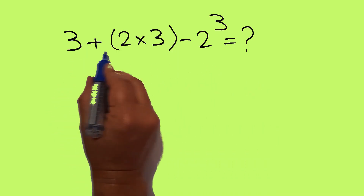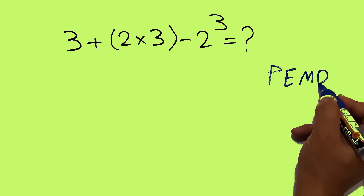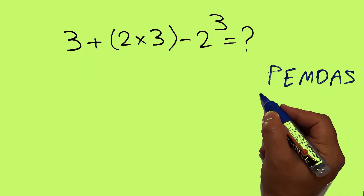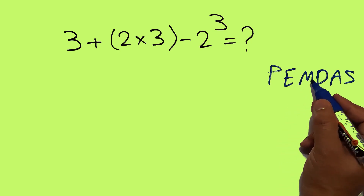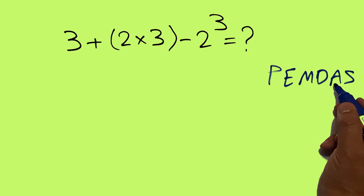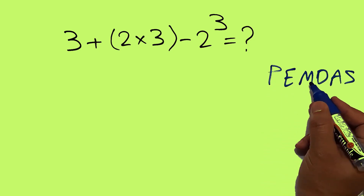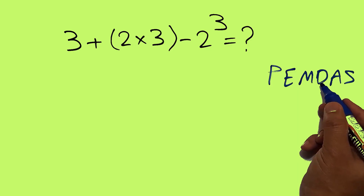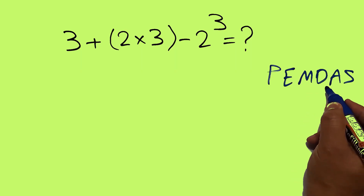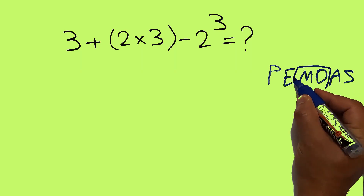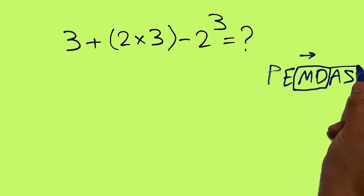According to the order of operations, which is PEMDAS: P stands for parentheses, E stands for exponents, M and D stands for multiplication and division, A and S stands for addition and subtraction. We first do parentheses, then exponents, then multiplication and division, and finally addition and subtraction. Remember that multiplication and division have equal priority, and we work from left to right.